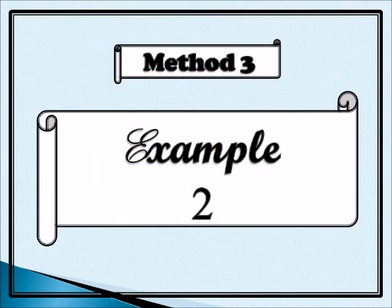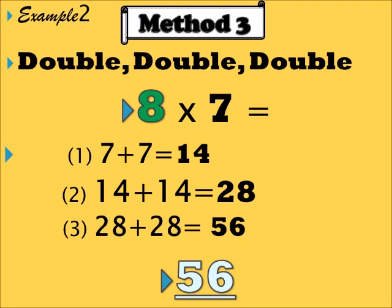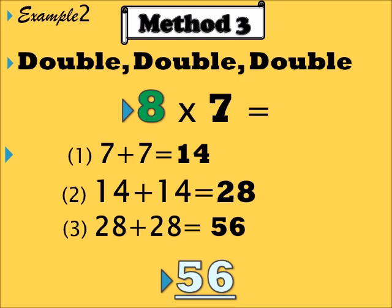Now example two: eight times seven. Double double double — seven plus seven is 14, you double the 14: 14 plus 14 equals 28, then you double the 28: 28 plus 28 equals 56. So eight times seven equals 56.